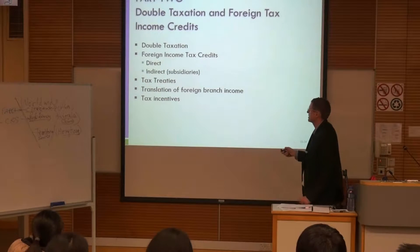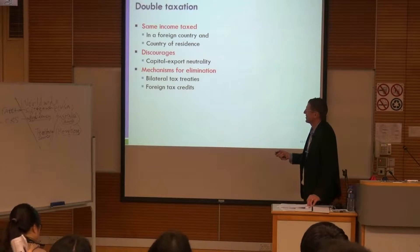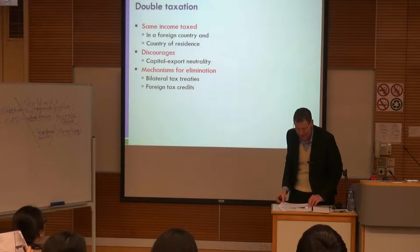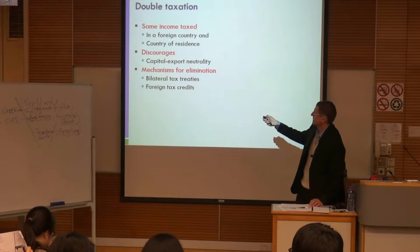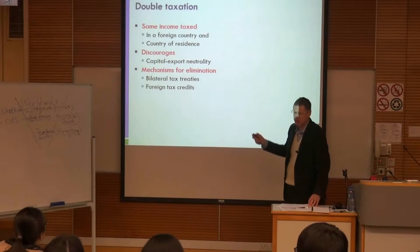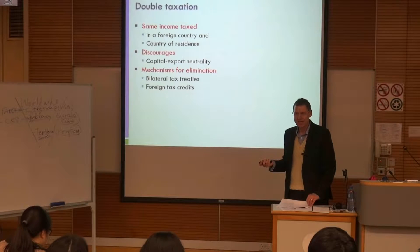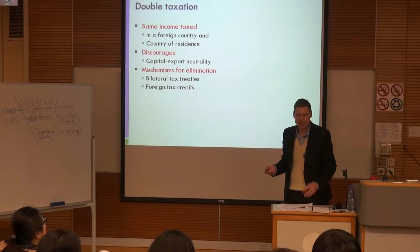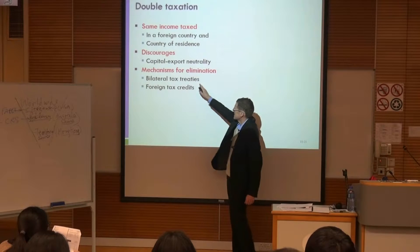Double taxation occurs when the same income is taxed in both a foreign country and the country of residence. We're trying to achieve neutrality and encourage trade between different countries. If there's double taxation, it may actually negate trade. Mechanisms for elimination include bilateral tax treaties and foreign tax credits.